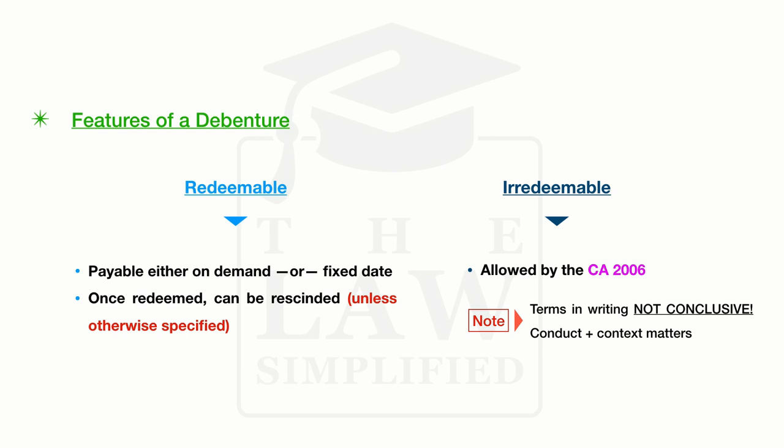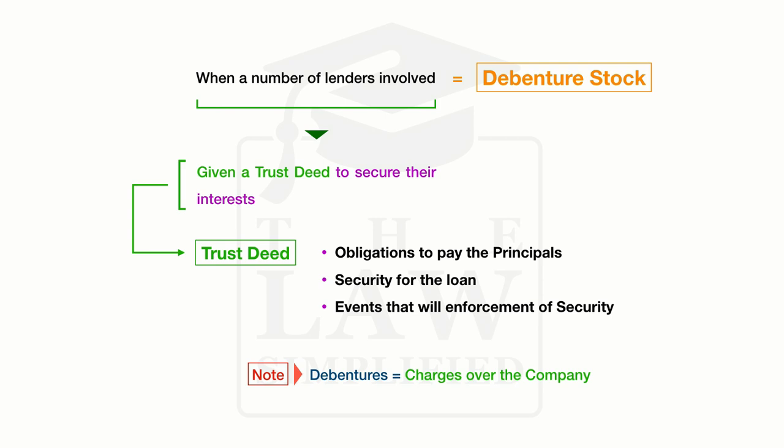On the other hand, an irredeemable debenture is also permitted under the Companies Act 2006, and while the terms are in writing, these are inconclusive because the conduct, context of the parties, and the matters at hand are what's applicable. Depending on the size and functions of the company, a debenture can be quite small in nature, or, much like in a debenture stock, several lenders may get involved. The bigger the number of lenders, the more onerous the requirements may be.